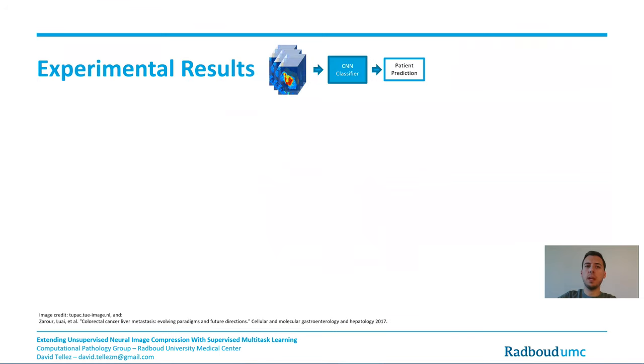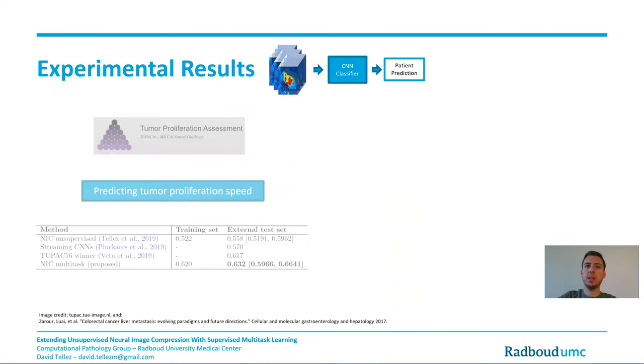We apply the system to two datasets. First, we obtain state-of-the-art results on the public TUPAC challenge predicting tumor proliferation speed.